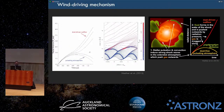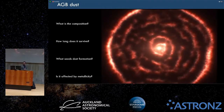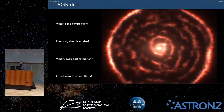Susan Hoffer refers to this as a two-stage rocket — the first stage is the pulsation, the second stage is radiation pressure. The problem is we can't really balance the physics to make it actually work, but we know this is the most likely scenario. We still don't know the composition of the dust, how long it survives, if you need some kind of seed nucleus to create dust, or if it's affected by metallicity.